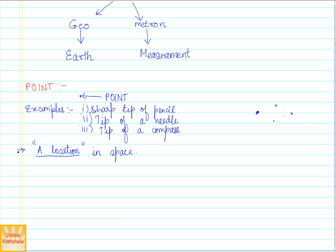How do we represent a point? We represent a point using a dot — and the sharper the dot, the better — but make sure it is at least visible. So let's say I make one point, then another point, then a third, fourth, and fifth point.